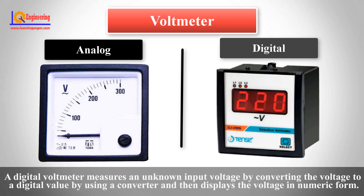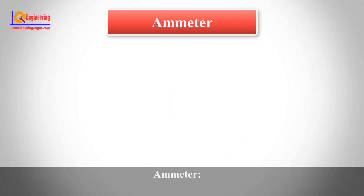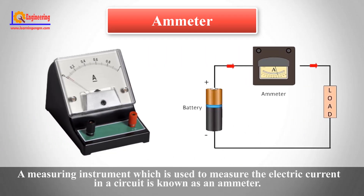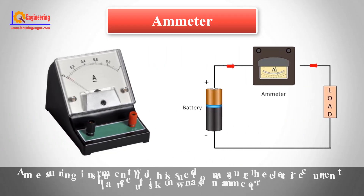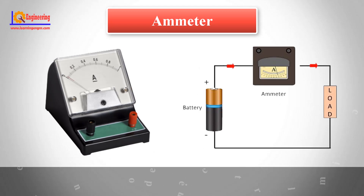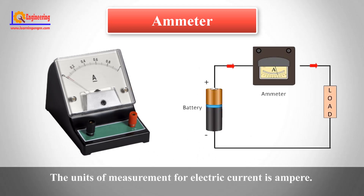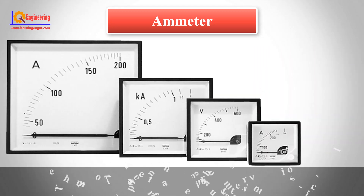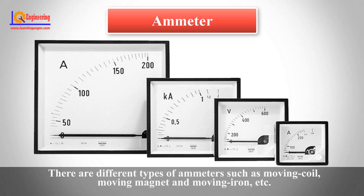Ammeter: A measuring instrument which is used to measure the electric current in a circuit is known as an ammeter. The unit of measurement for electric current is the amp. There are different types of ammeter, such as moving coil, moving magnet, and moving iron.